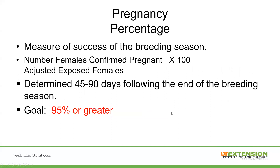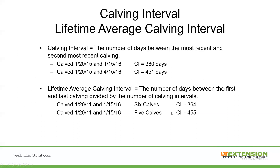Some of the factors we will use: the pregnant percentage is usually determined 45 to 90 days at the end of the breeding season — just the number of confirmed pregnancies divided by the exposed females. The goal here is about 95%. Having these benchmark goals is a way to really determine efficiency of not only the herd but also individual animals.